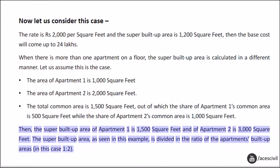Then the super built-up area of apartment 1 is 1,500 square feet and of apartment 2 is 3,000 square feet. The super built-up area is divided in the ratio of the apartments' built-up areas — in this case, 1:2.